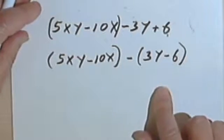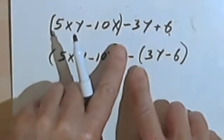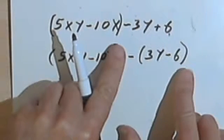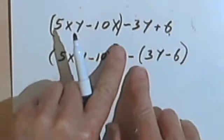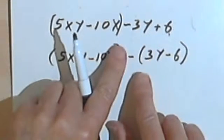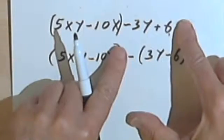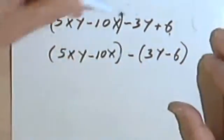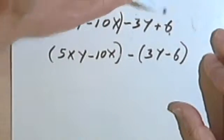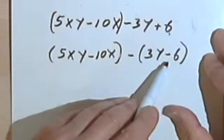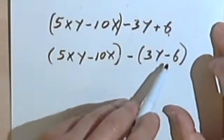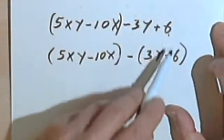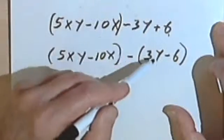Now if you're still confused about why I did that, think what would happen if I took this and distributed the negative sign. That would get me back to negative 3y and positive 6. So when I put the parentheses around it, I've got to change this sign so that I get a negative 6 in here. If you're still confused about that, take a moment, pause the video, and think about how you'd go back and forth between these two.